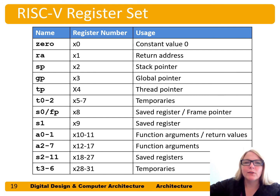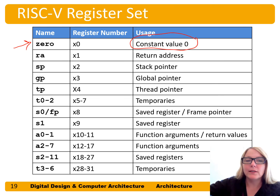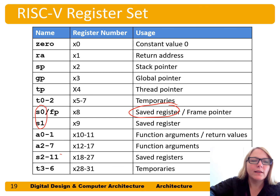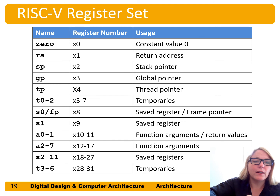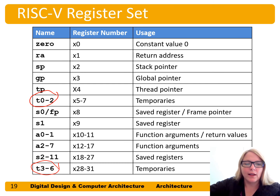Here is a list of the RISC-V register set. We have register numbers x0 through x31, and we use special names for these registers to indicate their conventional purpose. We'll focus on the zero register, which always contains the constant value 0. We also have saved registers s0 through s11 — 12 saved registers used for variables — and temporary registers t0 through t6, seven registers used to hold intermediate calculations. We'll discuss the other registers as we continue through this chapter.